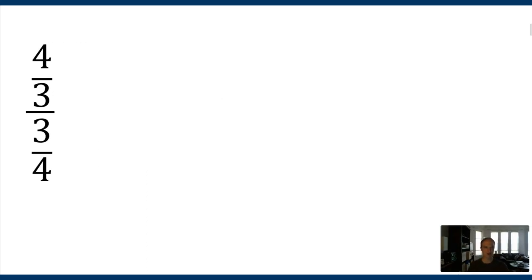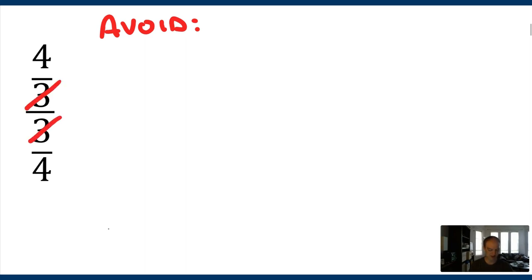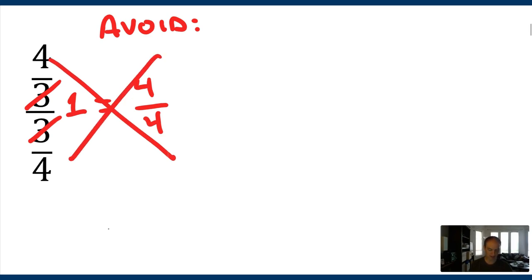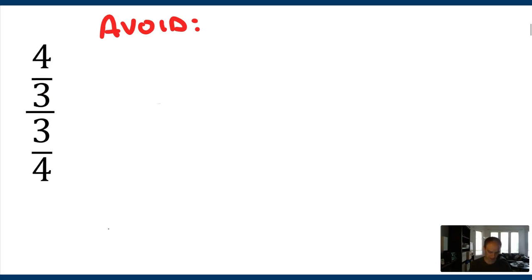First, I want to remind you of how you might have dealt with fractions like this way back when we were dealing with just numbers. A couple temptations to avoid. I know there's a 3 down here and a 3 down here — you want to avoid trying to cancel those and reduce them to 1 and make this become 4 over 4. That's not how this fraction works out. And similarly, you don't want to try to cancel out the 4s, even though there's a 4 up top and a 4 down low. Try to avoid that.